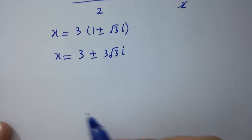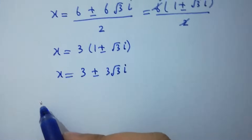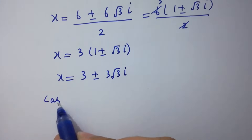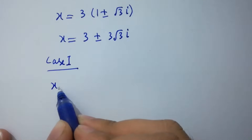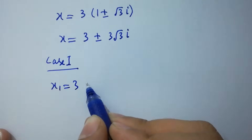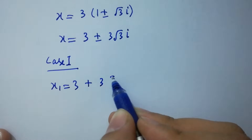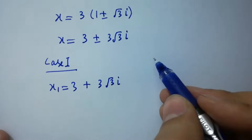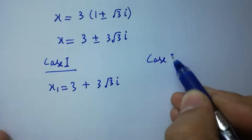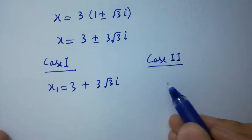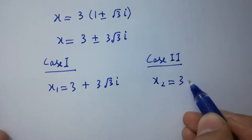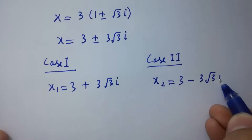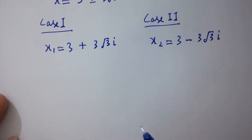So we have two cases. Case 1: x₁ equals 3 plus 3 times square root of 3 times i. Case 2: x₂ equals 3 minus 3 times square root of 3 times i.